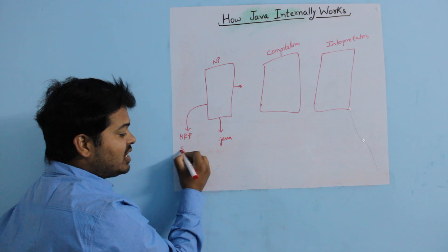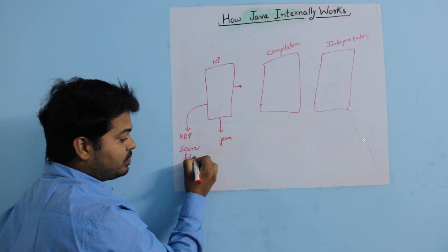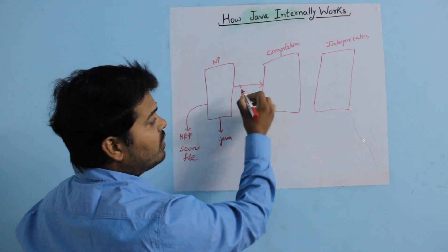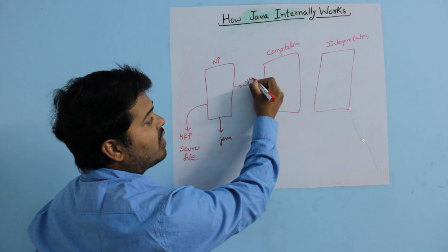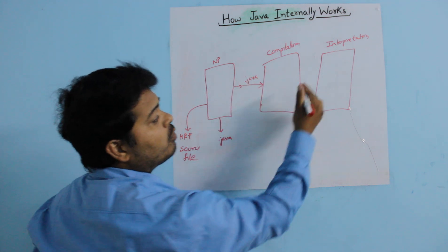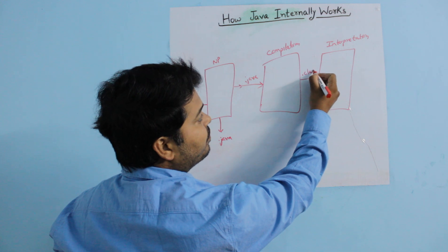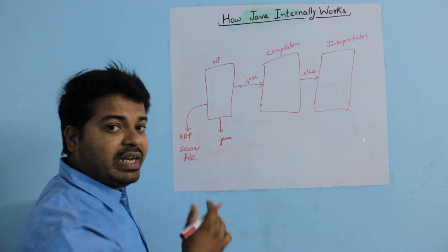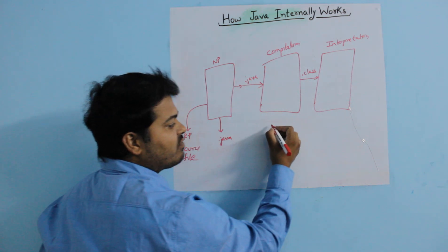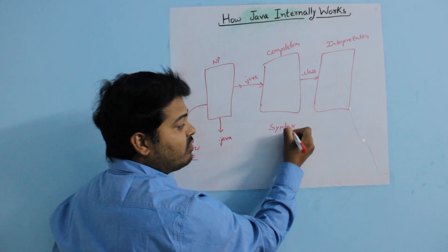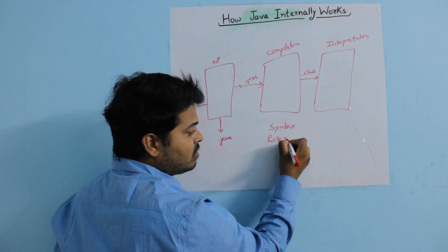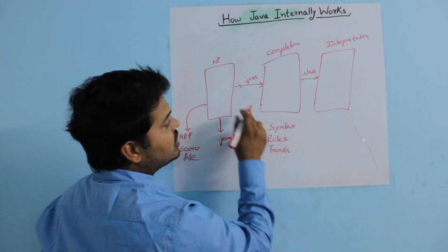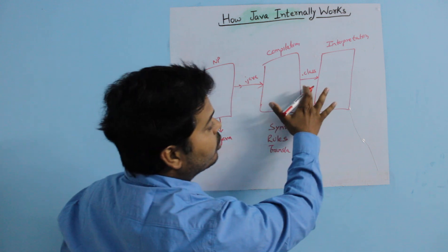The program you have written with an extension of .java is also called a source file. In the compilation stage, the input will be your .java file and the output will be your .class file. During compilation, it checks for syntax and rules, and it translates your .java file to your .class file.